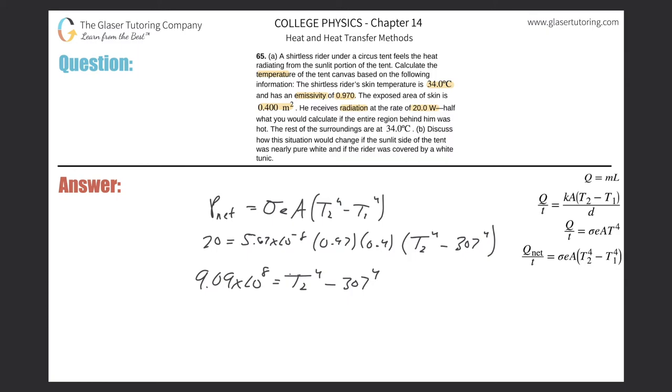And then, so we would have something like this, 9.79 times 10 to the, what is this now? One second, 3, 6. It looks like 9. Okay. And then just take the 4th root.